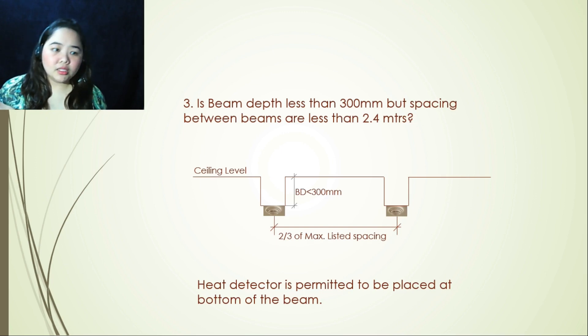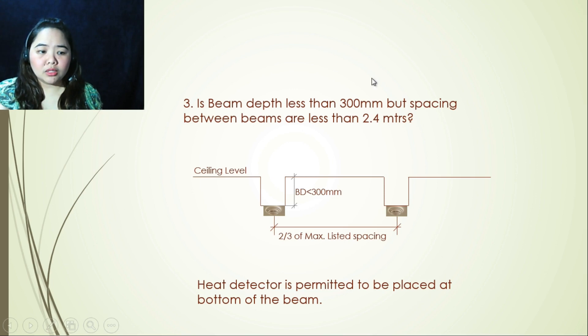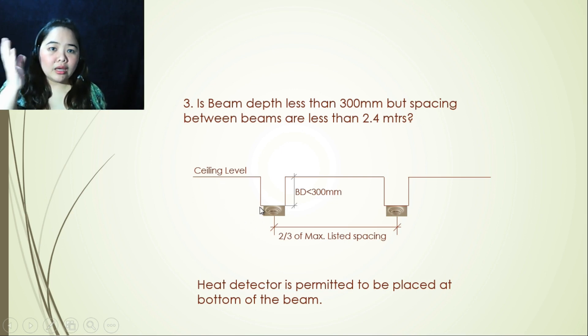Third argument is beam depth less than 300 millimeters, but spacing between beams are less than 2.4 meters. So this is what it looks like. If this is your argument, then smoke detector still can be placed on your ceiling underside, and it's also permitted to be placed at the bottom of the beam, which is still following two-thirds of the maximum listed spacing.